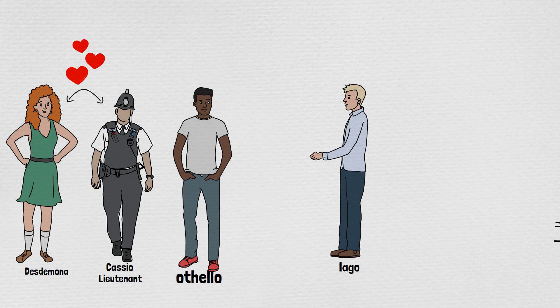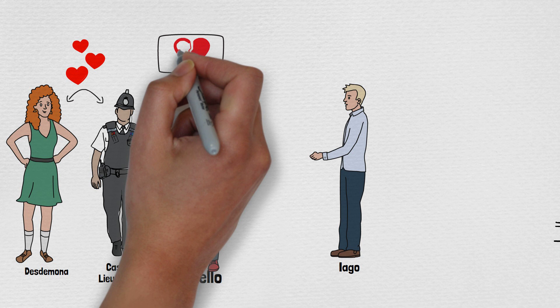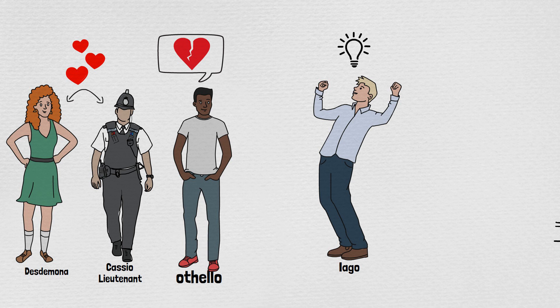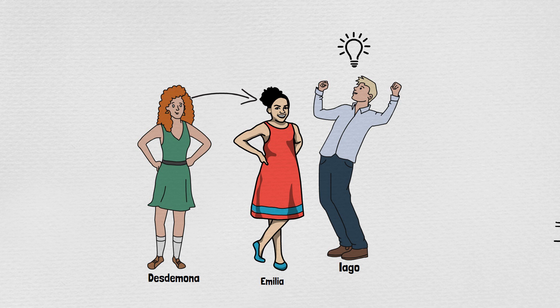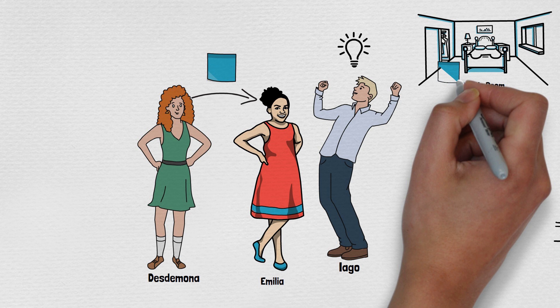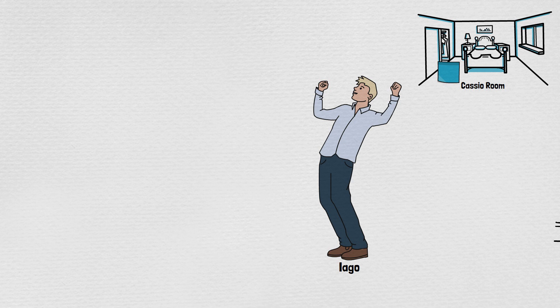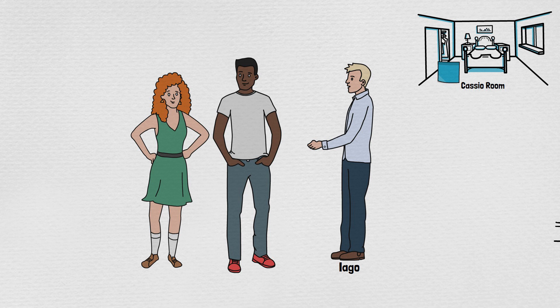On listening to this Othello is sad that how Desdemona can do this with him. Then Iago plays another trick. He asks his wife Emilia to bring Desdemona's handkerchief to him. Emilia didn't think the reason behind it and she picks Desdemona's handkerchief and gives it to Iago. Iago puts the handkerchief in Casio's room silently. Then Iago goes to Othello and tells that he saw Desdemona wipe Casio's beard. That handkerchief was a token of love to Othello from Desdemona.